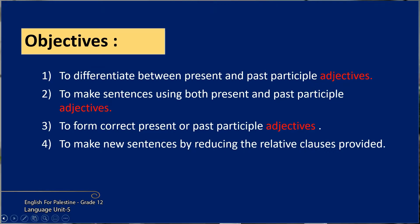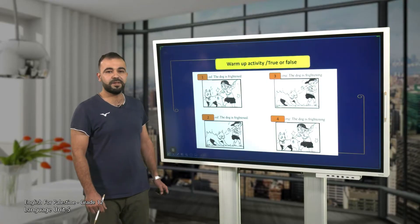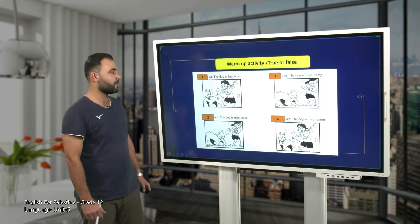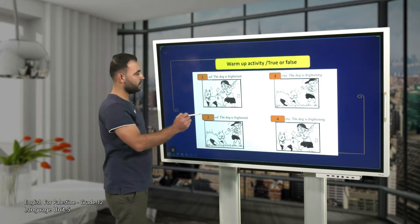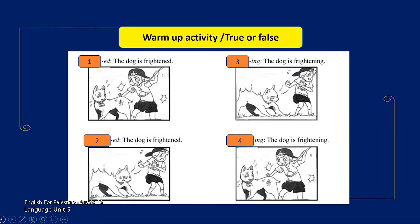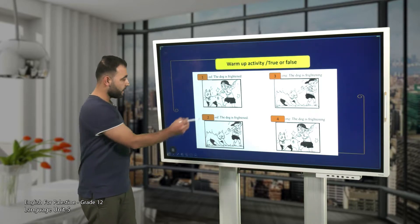Four, make new sentences by reducing the relative clauses provided. Let's start with this warming up activity — true or false. We have here four pictures. Pictures one and two are describing a cat or a dog and a boy. Let's read the first sentence: the dog is frightened, and number two: the dog is frightened.